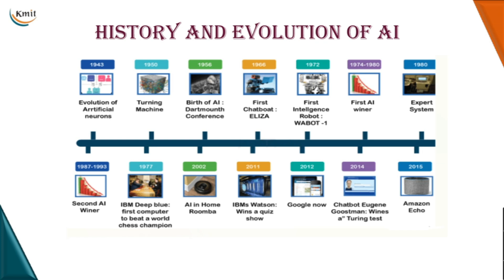Then we have expert systems built during that era, followed by the second AI winter. Then IBM Deep Blue became the first computer to beat a world chess champion. After that we have AI in home automation, IBM Watson winning a quiz show, Google using AI techniques, chatbots, and Amazon Alexa as personal assistants.